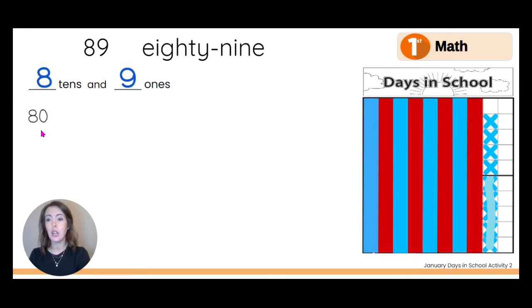So we can write 80 plus, how much is nine ones? Nine. Eighty plus nine is the same as 89. Good. Let's write another equation.